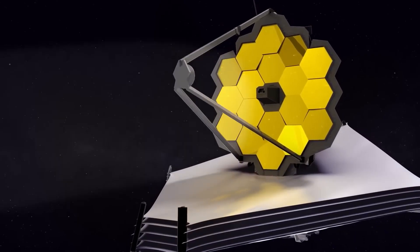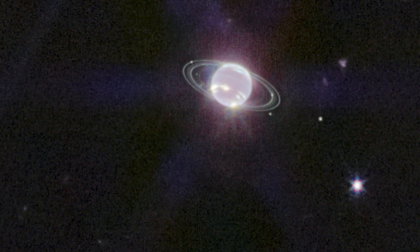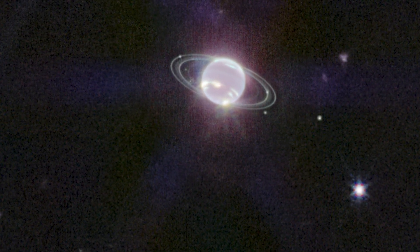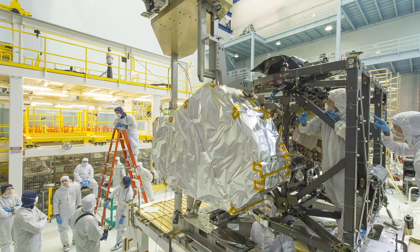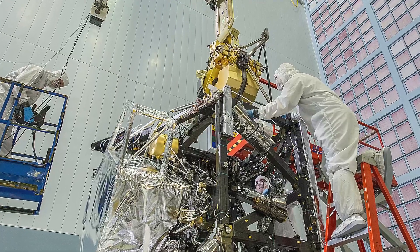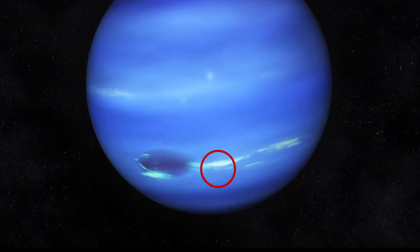When observed through the James Webb Telescope, Neptune appeared as a brilliant crystal ball with ghostly rings encirculating it. This is because the James Webb Telescope captures photos in the near-infrared region, which are reflected by clouds high in Neptune's atmosphere.